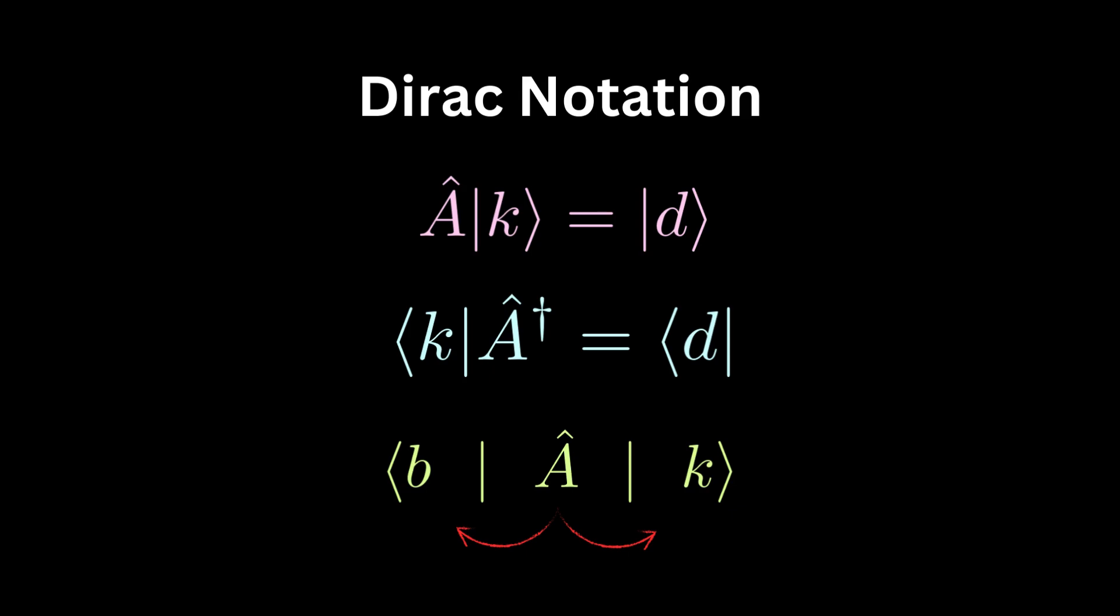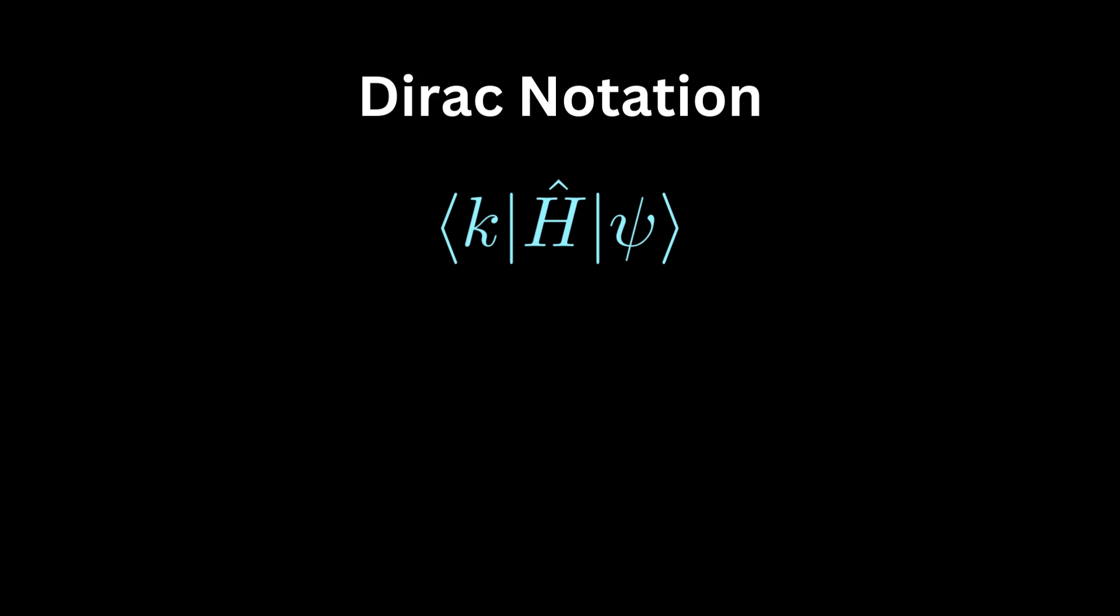That is great because if we have something like this, where h is the Hamilton operator of the energy, k is an energy eigenstate of h, and psi sum state, then we can simply apply h on its eigenstate and get a simple number, its energy eigenvalue.